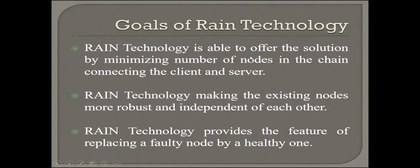There can be a minimum of nodes. RAIN technology makes the existing nodes more robust and more independent, making connections on network and processors more fault-tolerant and robust.